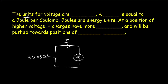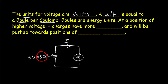The units for voltage are volts, and a volt is equal to a joule per coulomb. So if I consider coulombs of charge on a wire right next to the battery, each coulomb of charge would have three joules of electrical potential energy. And charges close to the negative side of the battery wouldn't have any joules of electrical potential energy at all.